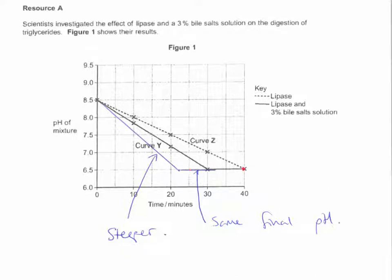And also, you'd finish at the same final pH because that is the pH produced when all of the triglycerides have been hydrolyzed. So you've got the pH of the fatty acids that are produced at the end. So let's break it down into the mark points. First mark point would be you get a steeper decrease and it levels off earlier. It doesn't matter when, as long as it's earlier than 30 minutes.